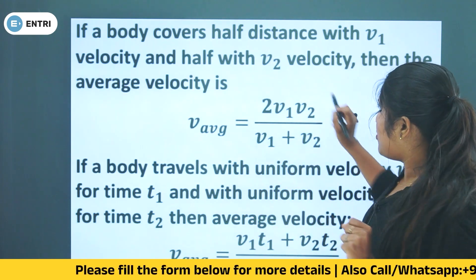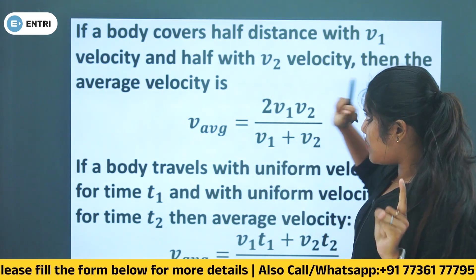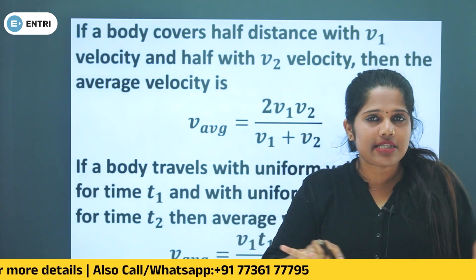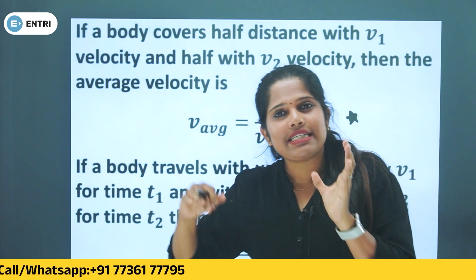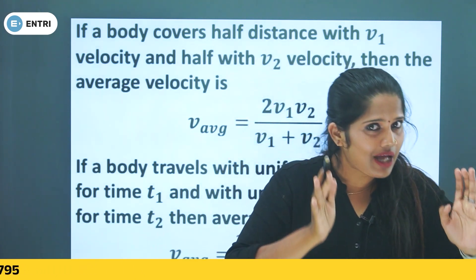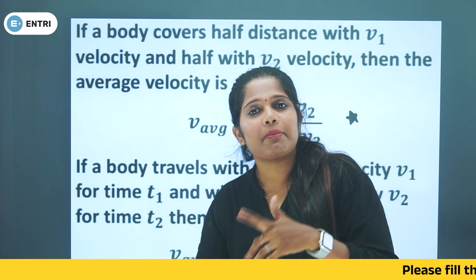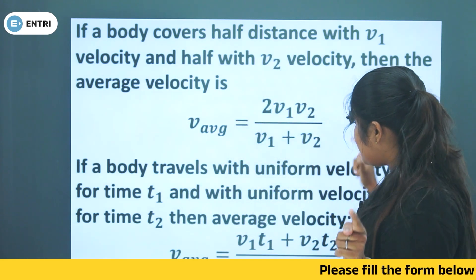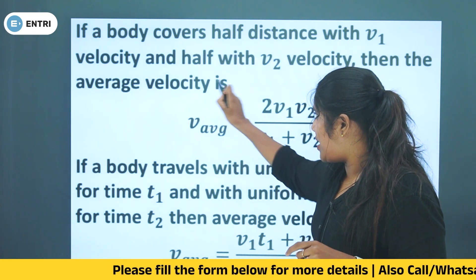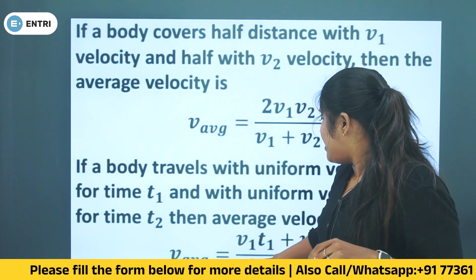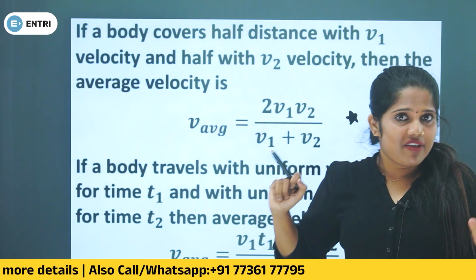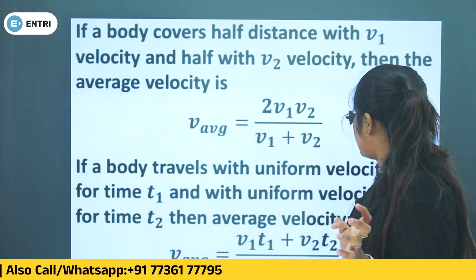Case 1: A body covers half the total distance with velocity v1 and the remaining half with velocity v2. For example, total distance is 100 km — first 50 km at v1 velocity, second 50 km at v2 velocity. The average speed formula for this case is: average speed equals 2v1v2 divided by v1 plus v2.